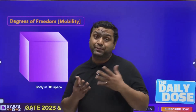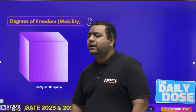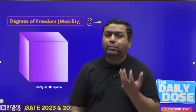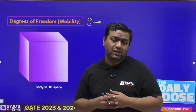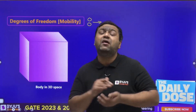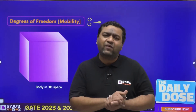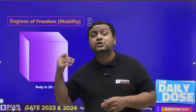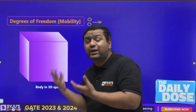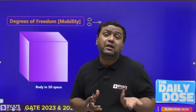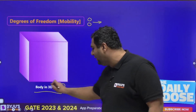Before we discuss vibration systems, we need to understand what degree of freedom actually is. Degree of freedom is also known as mobility. It is defined as the number of independent motions a system has, or in other words, the number of independent variables required to define the state of motion of the system. We need to see how many motions are going on and how many variables are required to define that motion.